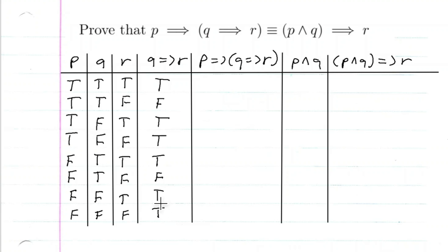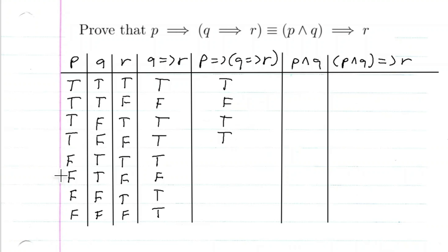Now we compute P implies Q implies R. True implies true is true. True implies false is false. True implies true is true. True implies true is true. And since our assumption P is false the rest of the way, we know the rest of these entries will be true.